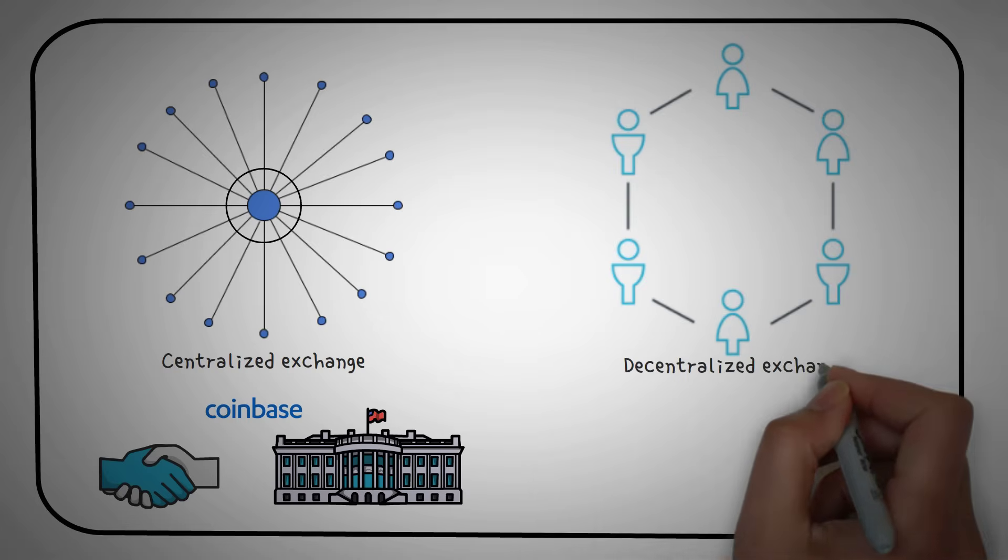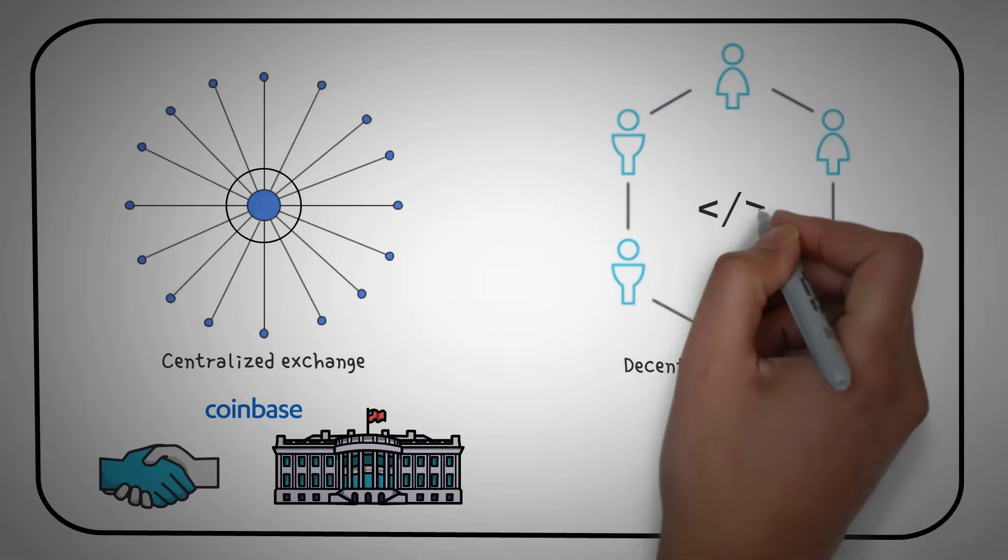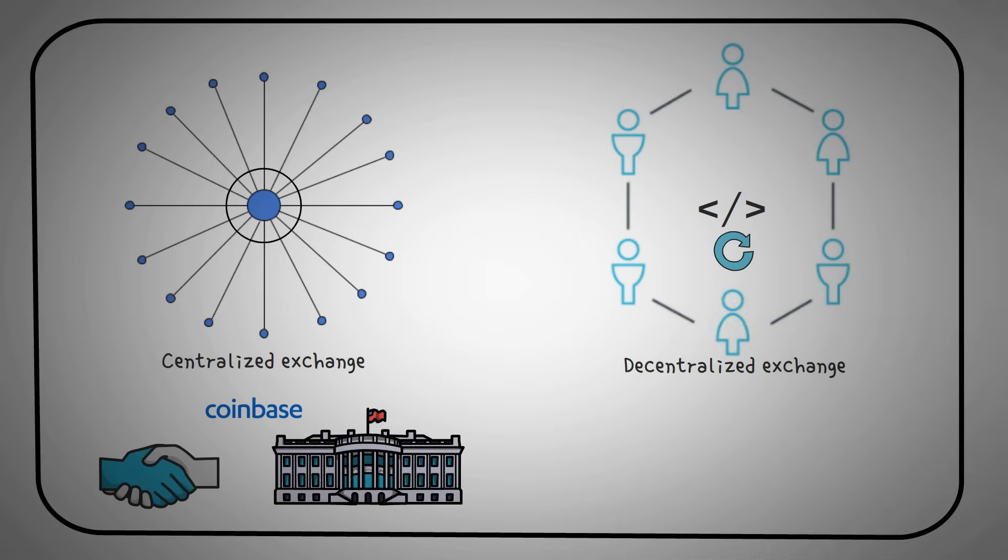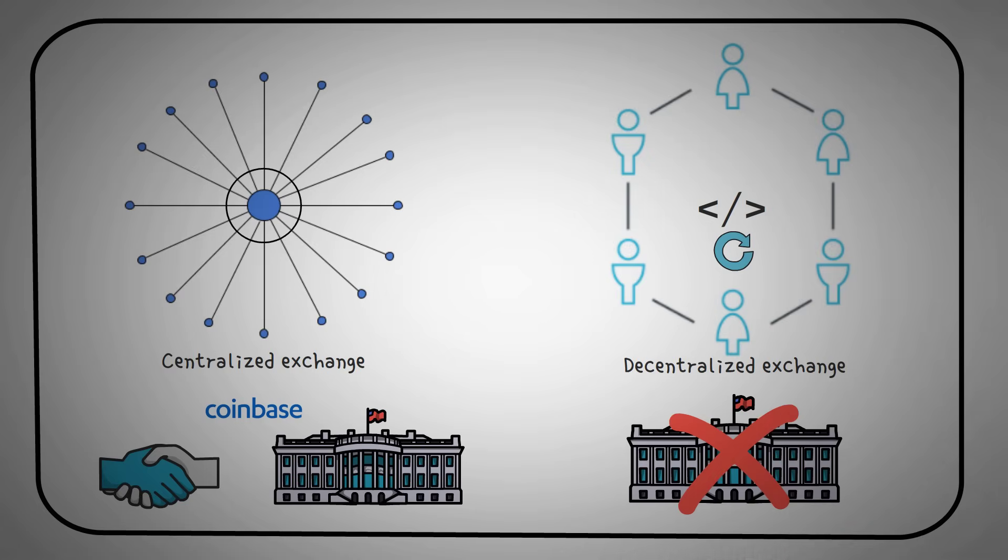On the other hand, a decentralized exchange is an exchange that is not run by a company. Instead, they are run by code. Changes to the exchange only happen when the code is changed. And due to their decentralized nature, a government cannot regulate, control, or even shut them down like they could do to Coinbase.